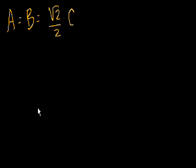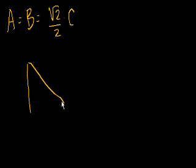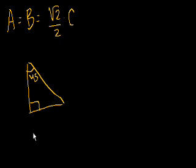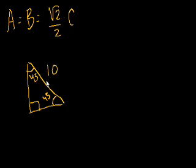Let's do a couple more problems. If I were to tell you that the hypotenuse of this triangle — and this only works for 45-45-90 triangles — if I just draw one 45-degree angle, you know the other angle has to be 45 as well. If I told you that the hypotenuse here is 10,